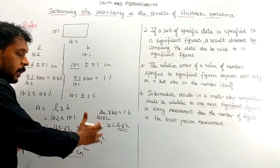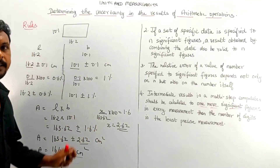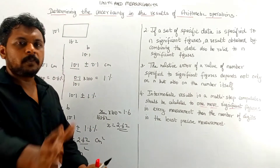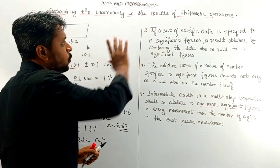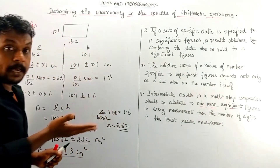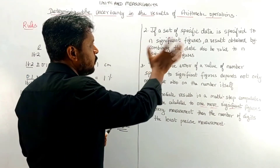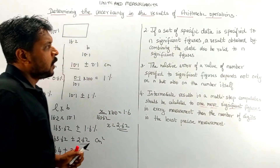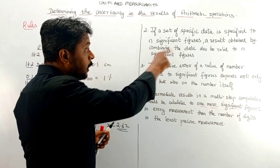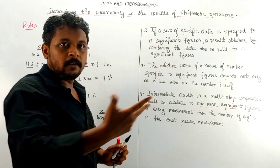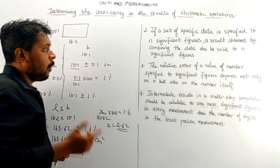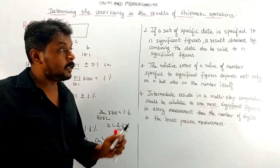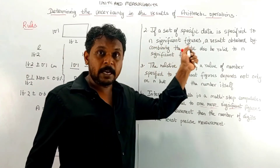This is the way of representing arithmetic operations with error — this is Rule 1. Next we have Rule 2: a set of specific data specified to n significant figures means a result obtained by combining the data should also be valid to n significant figures. However, this rule is accepted only for multiplication and division.